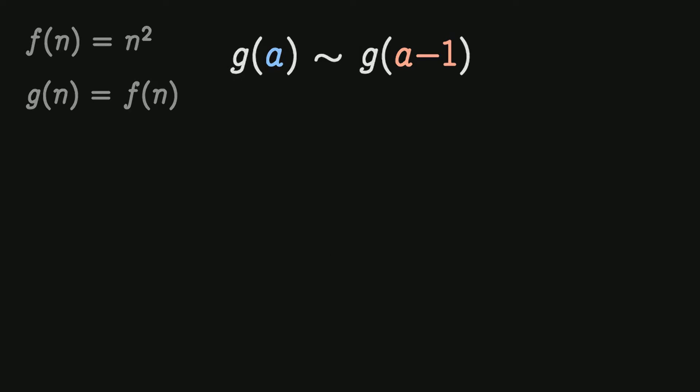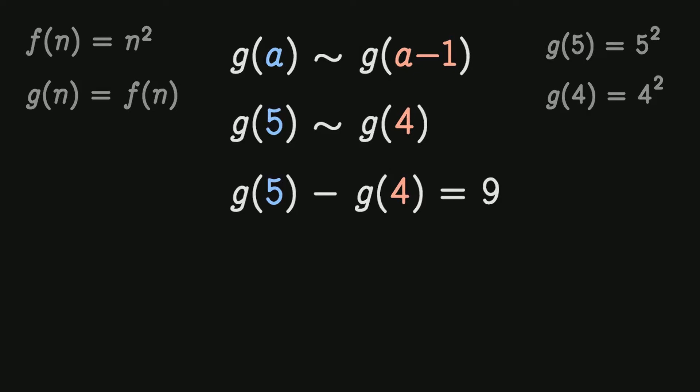In order to do this, let's try some values. Let's try to relate g of 5 and g of 4. So g of 5 is 25 because 5 squared is 25, and g of 4 is 16 because 4 squared is 16, so we have g of 5 minus g of 4 is equal to 9. 9 is the sum of 5 and 4, therefore g of 5 minus g of 4 is equal to 5 plus 4. Now we can solve for g of 5.